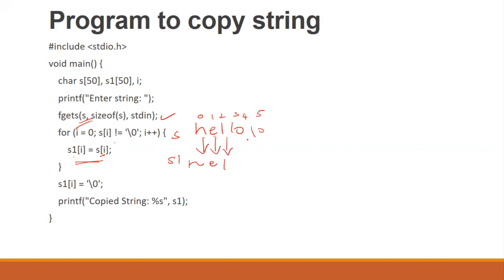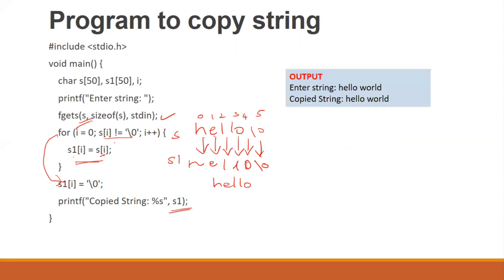We copy it till the condition of i — till the null terminator. So you will get the copy of the string as 'hello'. This is the program to copy a string without using a string handling function. For example, output: input 'hello world' and then copy it to the string.